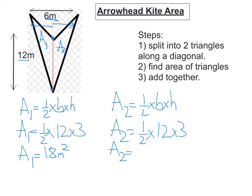So the area of this triangle is also 18 metres squared. So my total area, which we add up to the two areas of the triangles, 18 plus 18 is 36 metres squared.